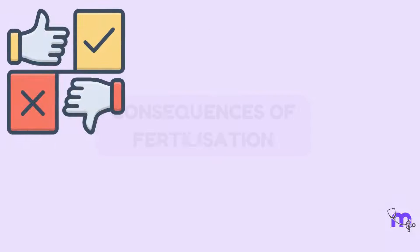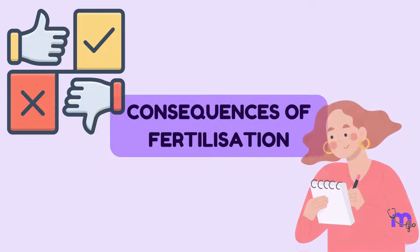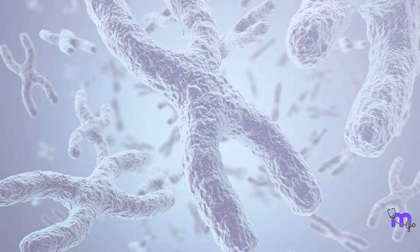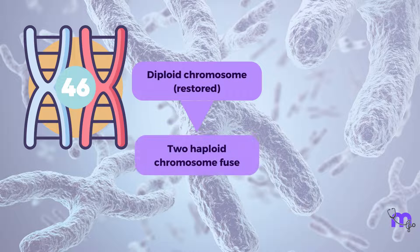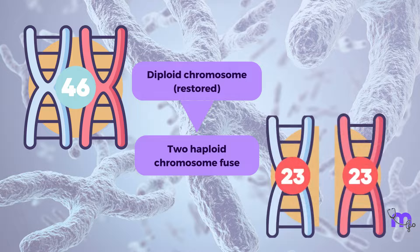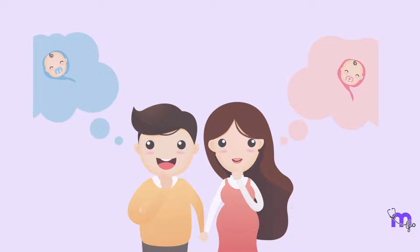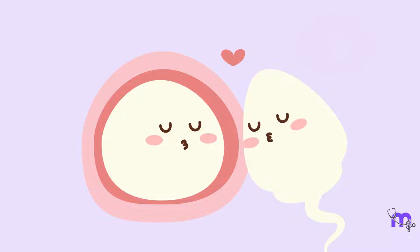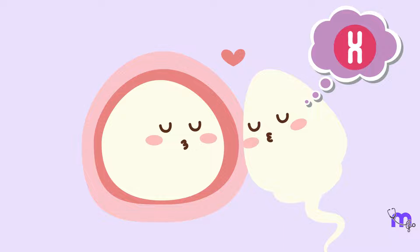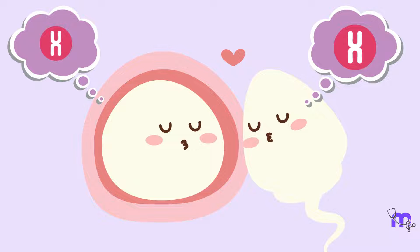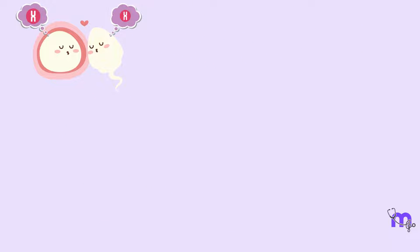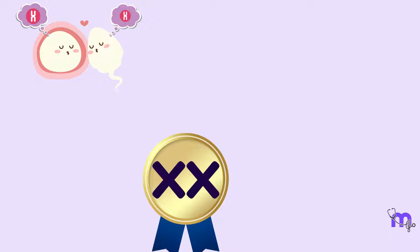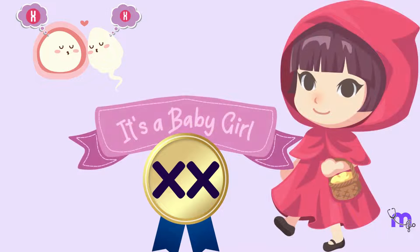There are specific consequences of fertilization worth noting. Firstly, the diploid chromosome number is restored when two haploid cells, each having 23 chromosomes, fuse together. Secondly, sex determination occurs during this process. If the X chromosome from the sperm meets the X chromosome of the egg, the resulting combination of sex chromosomes is XX and the embryo will develop into a female.